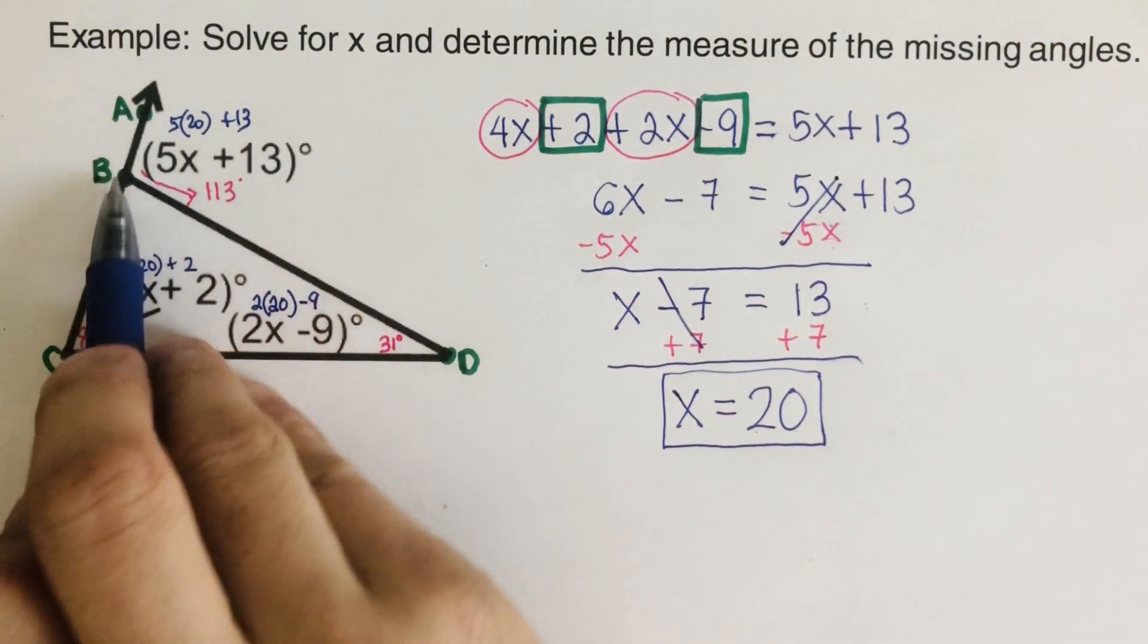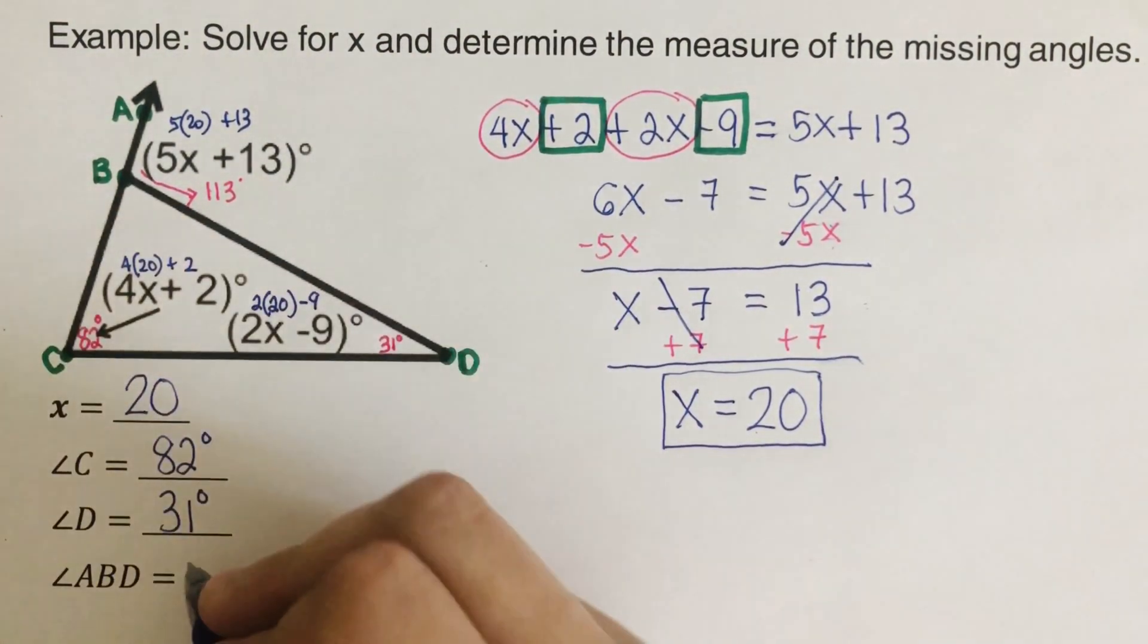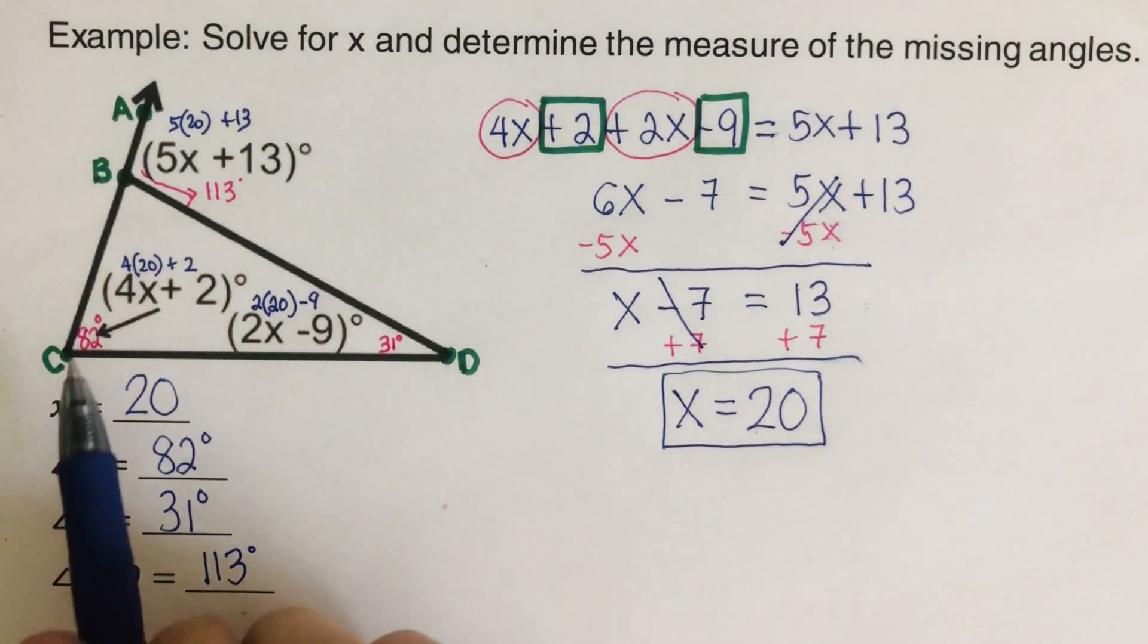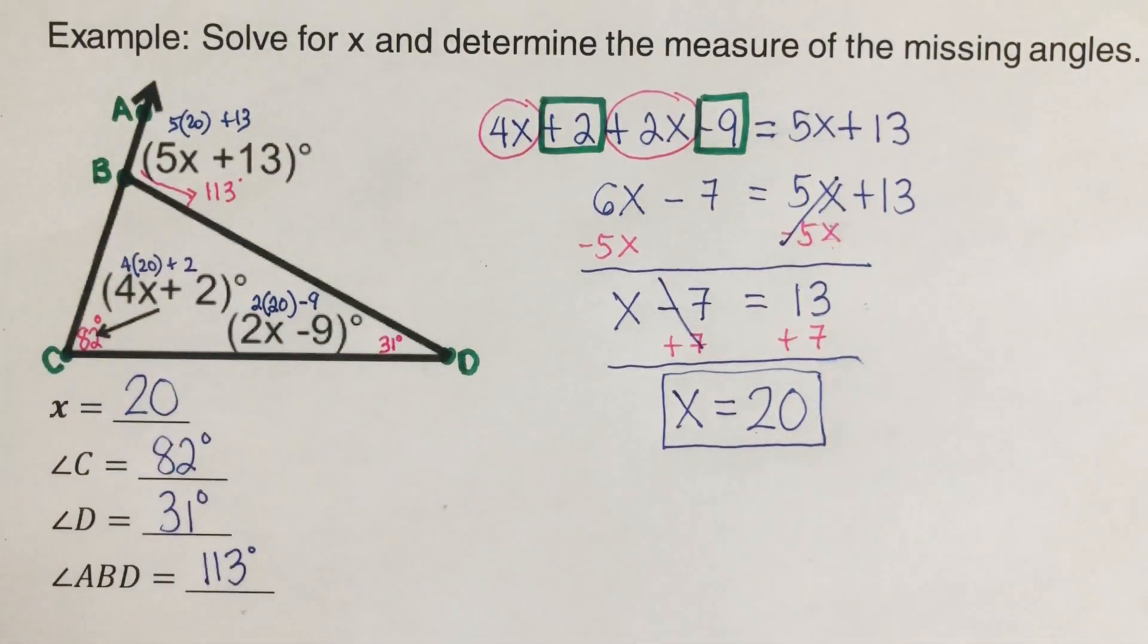So angle ABD, this corner right here is 113. And this makes sense because if we add 82 plus 31 is 113.